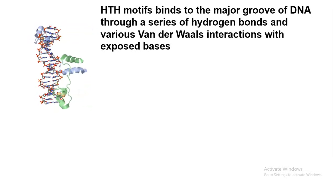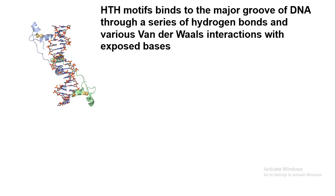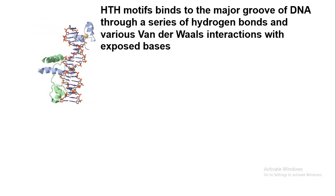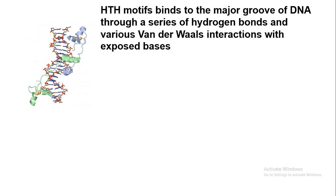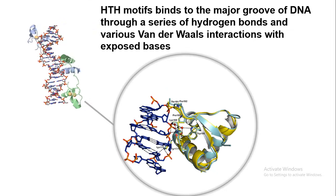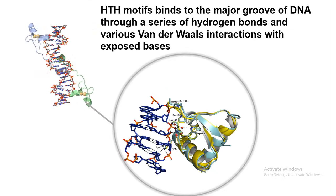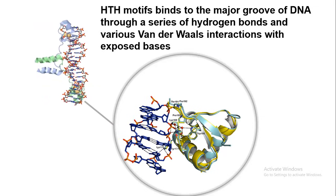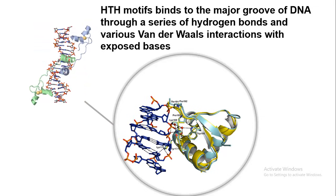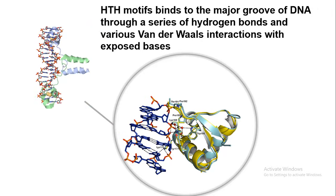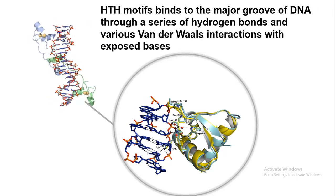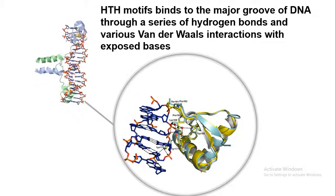The residues that are exposed in the major groove from the HTH protein are actually binding to specific bases in the DNA. For example, there are specific groups from the HTH motif — such as tryptophan or lysine — that interact with the aromatic bases in the DNA.